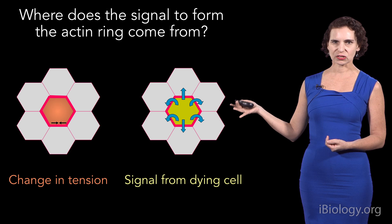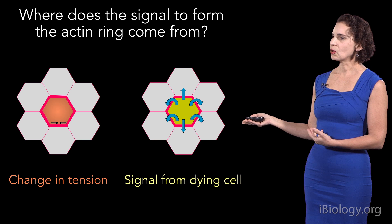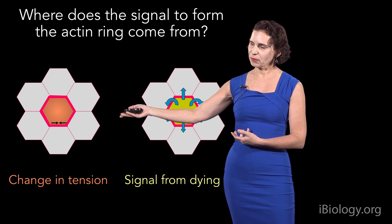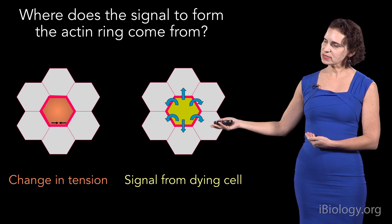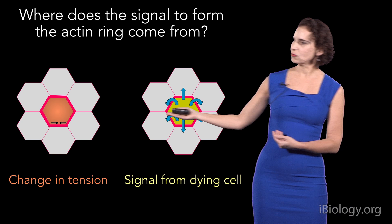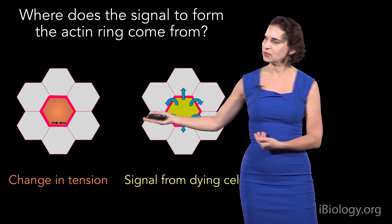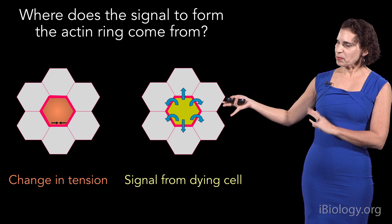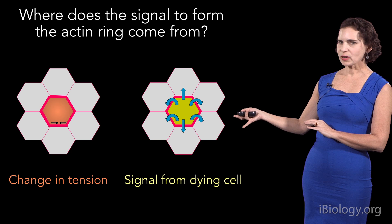When we first found this, we wanted to understand the signaling that controls this process. There were two broad models: one was that cells could sense a change in tension and react by forming the actinomyosin cable, and the other was that there could be a positive signal coming from the cell going to extrude to activate actinomyosin contraction. What I'll show you is that there is a positive signal that activates this cable, and the way we identified it was through an assay we call the cell addition assay.